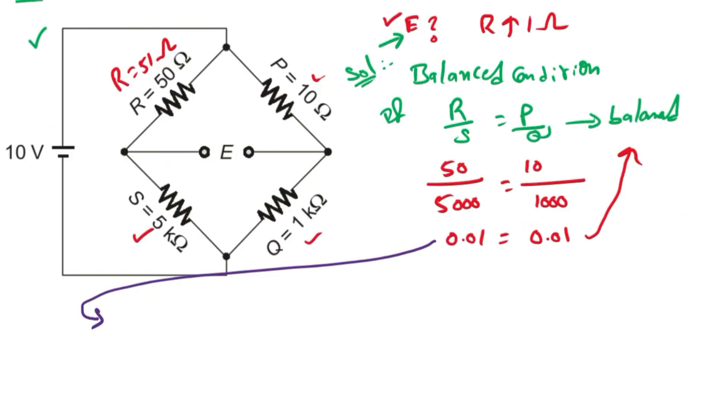If the bridge is balanced, then output voltage E equals, we know the formula, V input times Q/(Q+P) minus S/(S+R). So we know all the values, just substitute here.